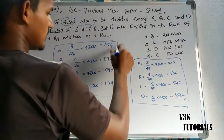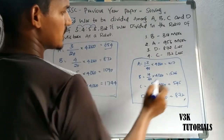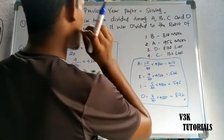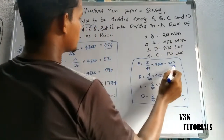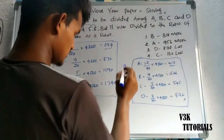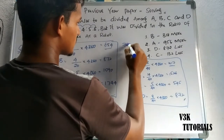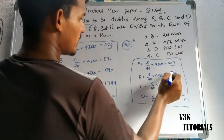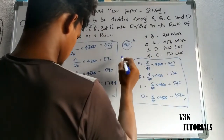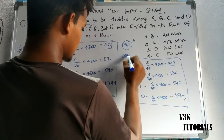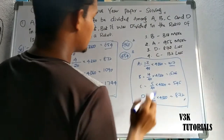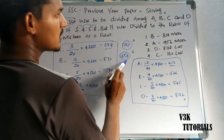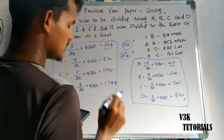A's correct amount is 654. With the mistake ratio, A received 1,417 (using 13 by 40 into 4,360). The difference for A is 763. Next, B's difference: the correct share is 872, but the mistaken share is 1,526. So B's difference is 654.